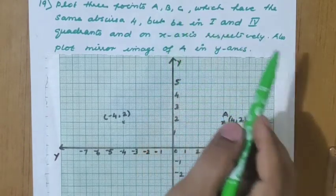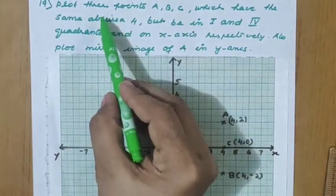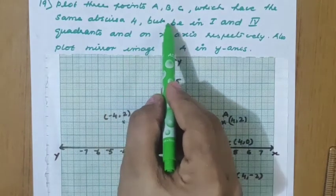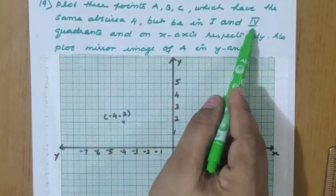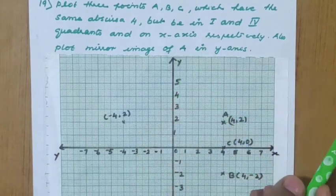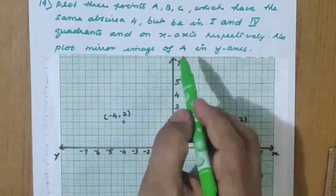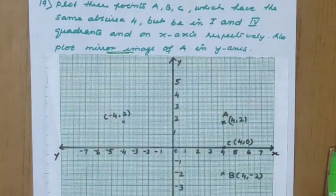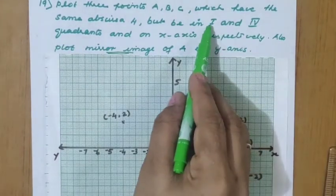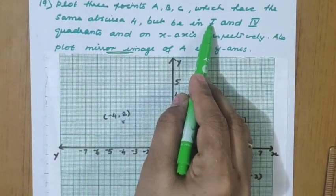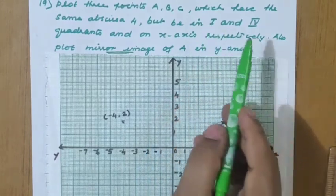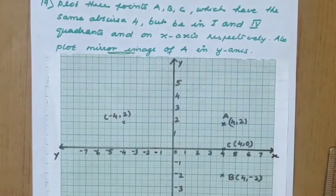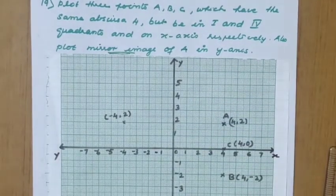Also plot the mirror image of A in the y-axis. Since abscissa is 4 for all three points: A is in the first quadrant, B is in the fourth quadrant, and C is on the x-axis. First we plot A, B, C — abscissa is 4 and it is in the first quadrant.